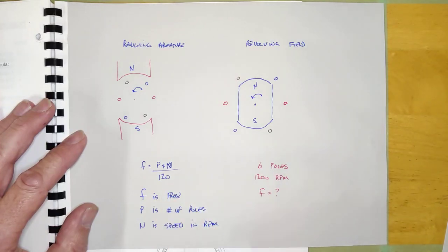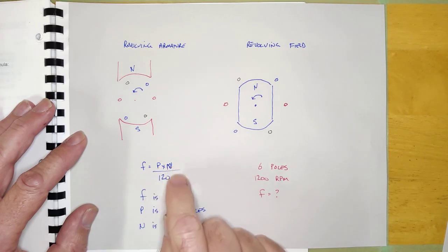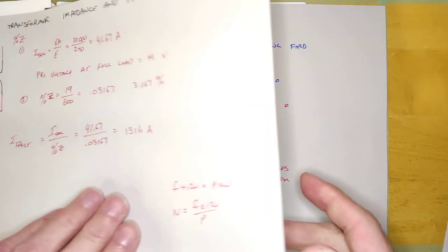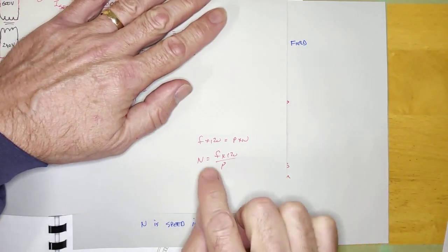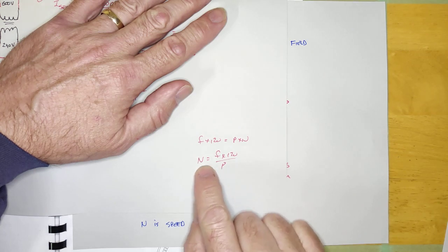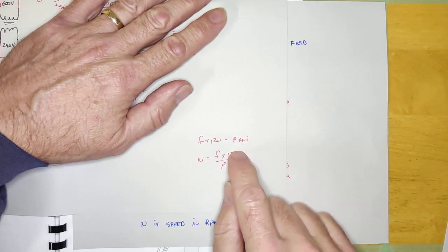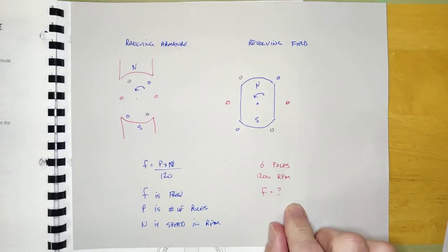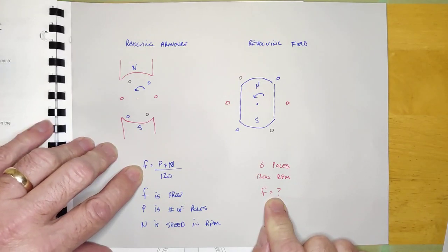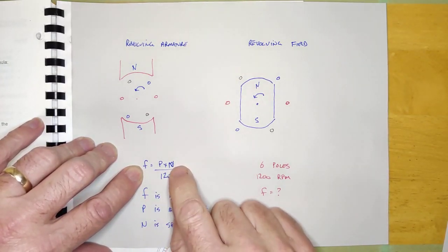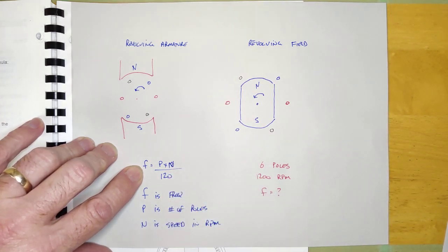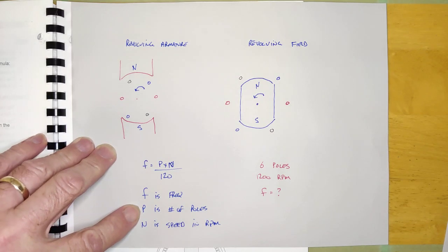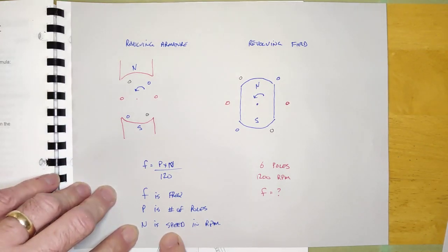The other thing I want to talk to you about is this formula: F equals P times N over 120. You've been using a very similar formula in electronics for figuring out the sync speed of a motor. This same formula, transformed differently, calculates the frequency that a generator outputs if I know the number of poles it has and how fast it's turning. F is the output frequency, P is the number of poles, N is the speed in RPM, and 120 is a constant.